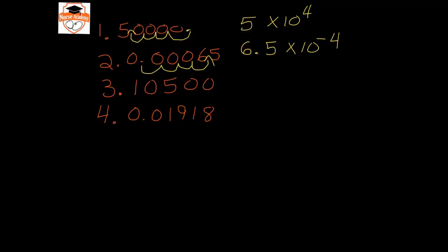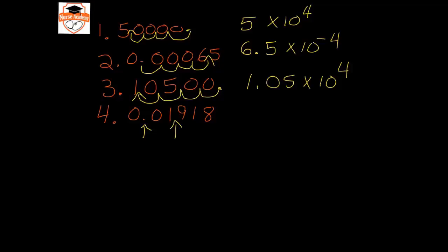For example 3, moving the decimal point gives 1.05 times 10. This value is larger than 1, so it gets a positive exponent: 1, 2, 3, 4 — giving 1.05 times 10 to the 4th. For the final example, moving the decimal from its original position gives 1.918 times 10. Moving it 1, 2 places, and since this value is smaller than 1, we put a negative sign, giving 1.918 times 10 to the negative 2.